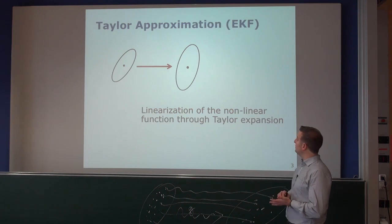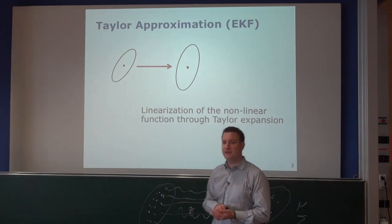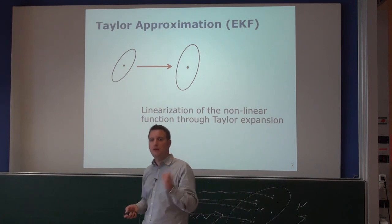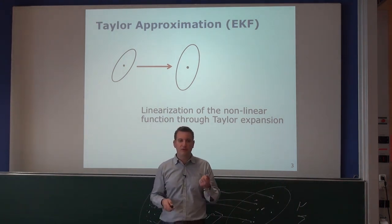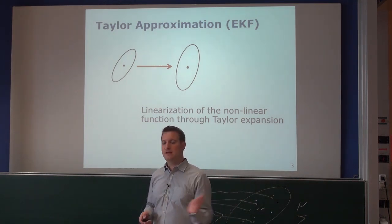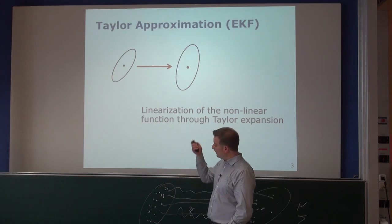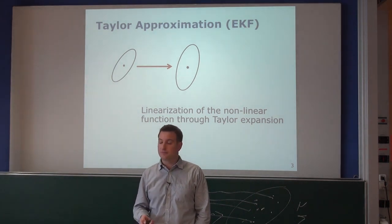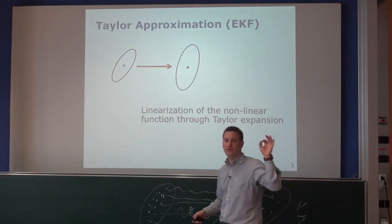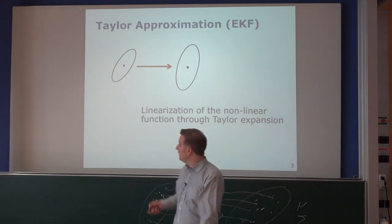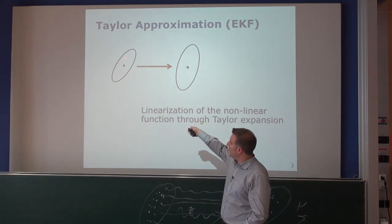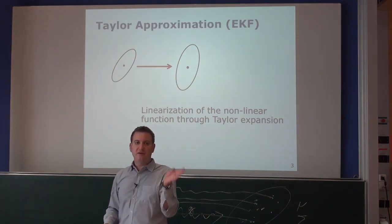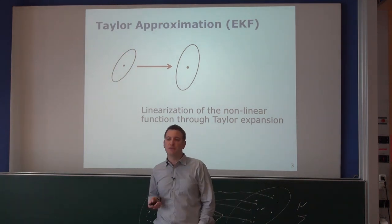The EKF, or the Taylor approximation used in the EKF, takes the current mean — just a single point — and uses it as the linearization point for the nonlinear function G, then maps the Gaussian using the linearized function. The important thing is we only used one single point. And this single point is suboptimal if, say, the function is highly nonlinear in the region of the three-sigma ellipse.